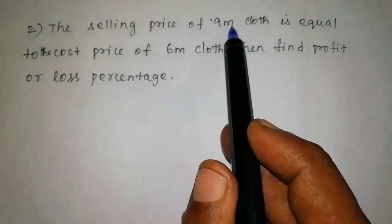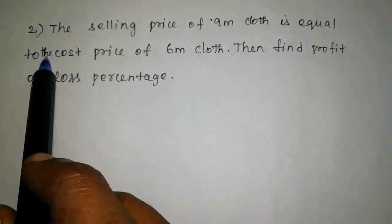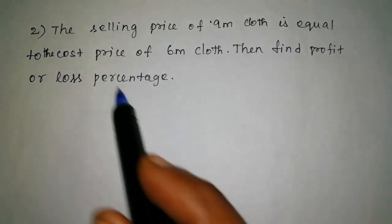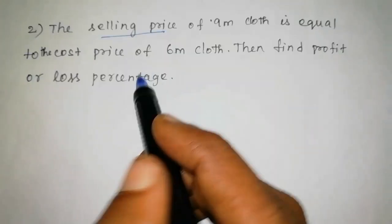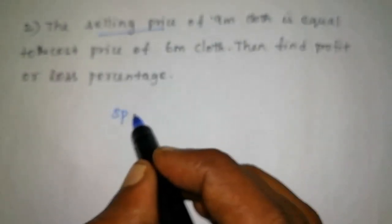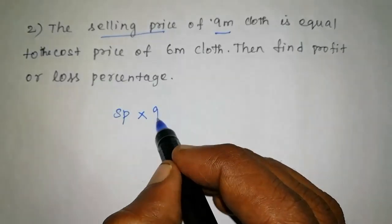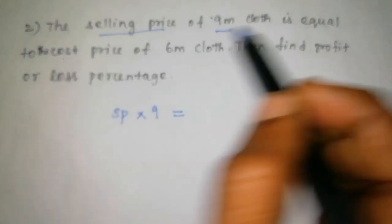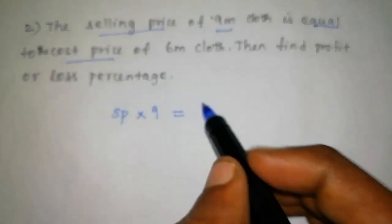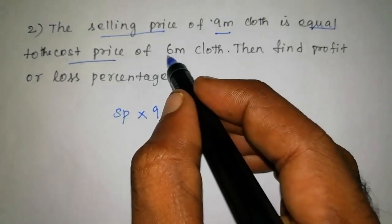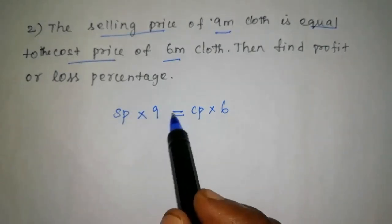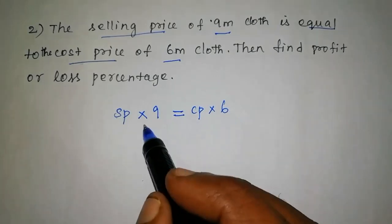The selling price of 9 meter cloth is equal to the cost price of 6 meter cloth. Then find the profit or loss percentage.